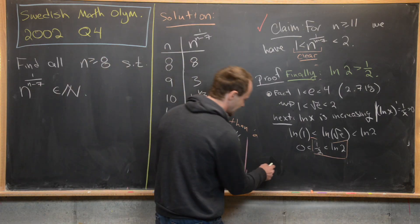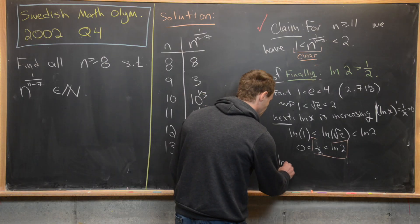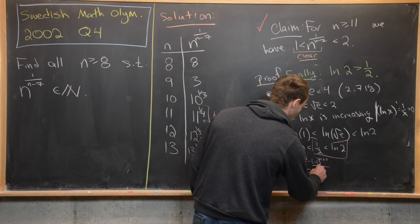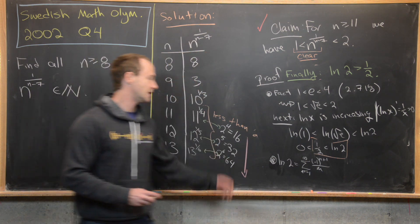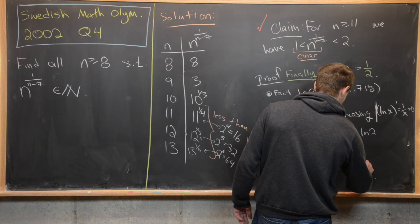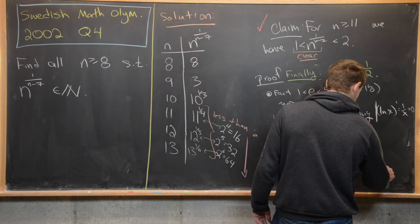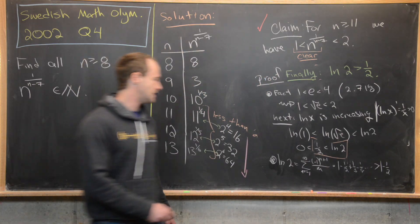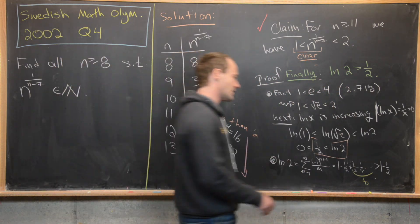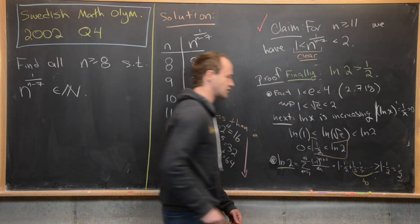A second way uses the alternating harmonic series: ln(2) = 1 − 1/2 + 1/3 − 1/4 + ⋯. Since all terms past the first two sum to something greater than 0, we have ln(2) > 1 − 1/2 = 1/2. This confirms ln(2) > 1/2.